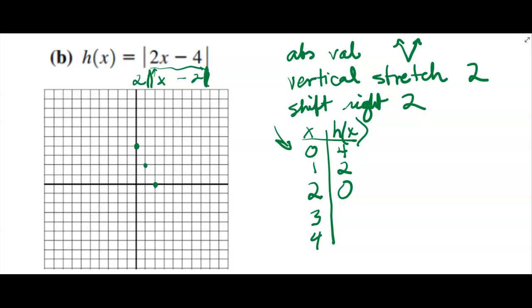And then if I put in 3, I'm expecting to get a 2 out. 3 minus 2 is 1. 1 times 2 is 2. See, what's happening is you're getting that absolute value part the same because you're getting the negative case and then the positive case.